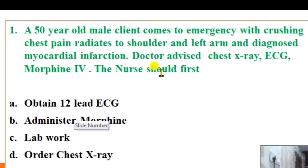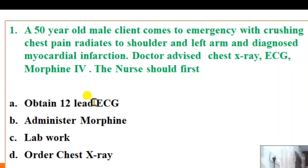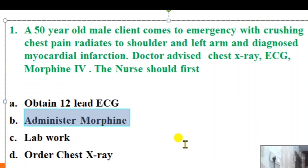The client presents with crushing chest pain radiating to the shoulder and left arm. Administering Morphine is important for pain management. That is the priority management — administering Morphine IV for pain relief.